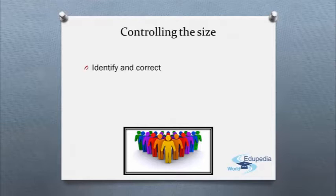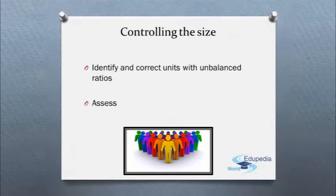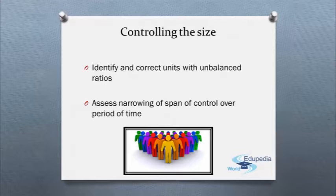We need to identify and correct units with unbalanced or skewed ratios between supervisors and subordinates. And we need to watch for narrowing of span of control over period of time. We need to take corrective actions that might include restructuring, training or downsizing. So this is all about span of control today.